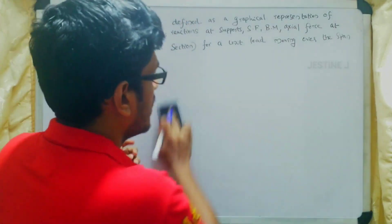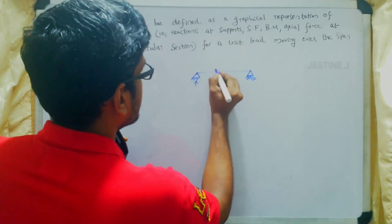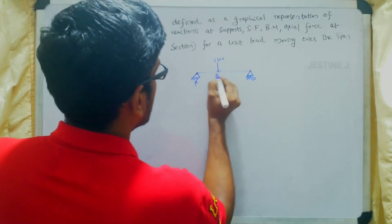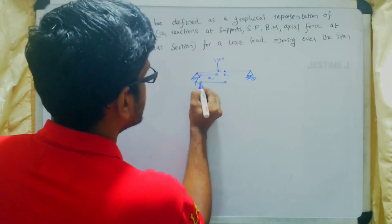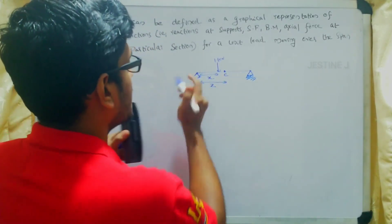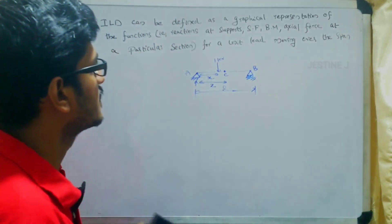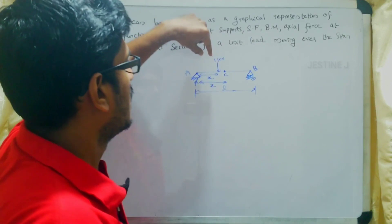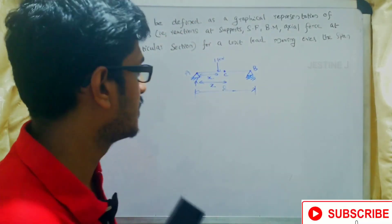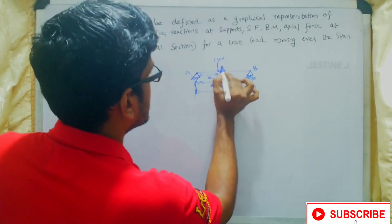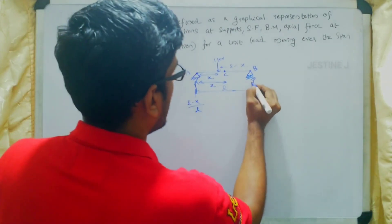We note down the values of reaction at each support. If a 1 kilonewton force is acting at a point x from A, and we have to find out the shear force at point C — where C is at a distance z from point A — then reaction Ra is equal to (L minus x) by L, and reaction Rb is equal to x by L.